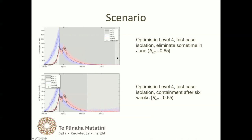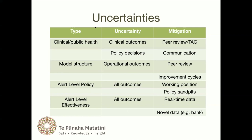Here's an optimistic scenario with optimistic population-wide controls and fast case isolation, adding up to give an effective R of about 0.65. In this scenario we keep the controls on until we eliminate — sometime in late June the disease is eliminated in most simulations. Whereas here, if we come out after six weeks and have just contained, the disease is still present in most simulations. I've had to work up a way of communicating these uncertainties to policymakers.